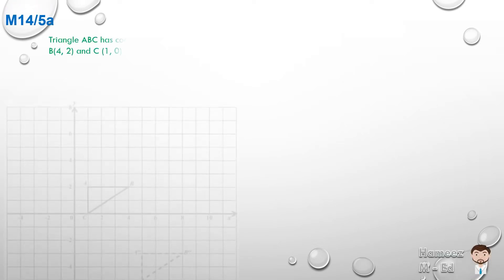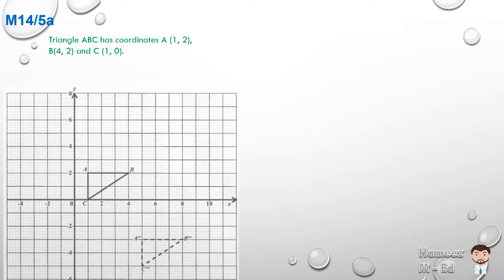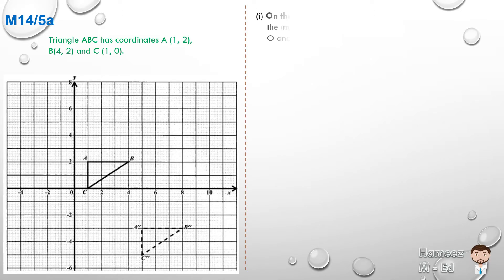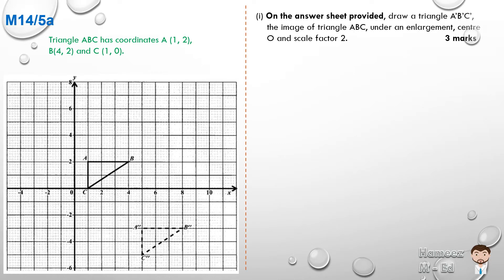May 2014, number 5A. Triangle ABC has coordinates A(1,2), B(4,2) and C(1,0). Part one: on the answer sheet provided, draw triangle A'B'C', the image of triangle ABC under an enlargement, center O and scale factor 2. So let's bring up the center being at O, which is the origin where the two axes cross, and since our enlargement is plus 2 and our triangle is to the right, it means that when we enlarge it the newer larger triangle is going to go further to the right.